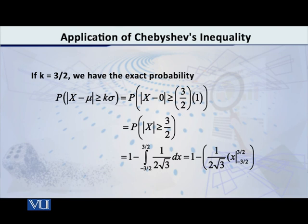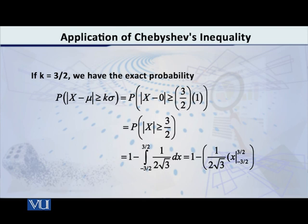If I insert the values of mu, sigma, and k in the left-hand side of the Chebyshev inequality and try to compute the exact probability for that interval, I will have: the probability of |x − mu| ≥ k·sigma, which is the probability of |x − 0| ≥ (3/2)×1, meaning k is 3/2 and sigma is 1. So this equals the probability of |x| ≥ 3/2.